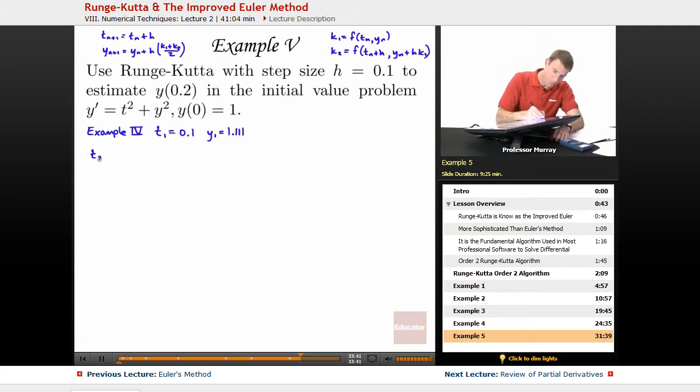Our t2 is t1 plus h, so that's 0.2. And now I'm going to find my k1 and k2. So k1 is f of (t_n, y_n), so that's 0.1 and 1.111.